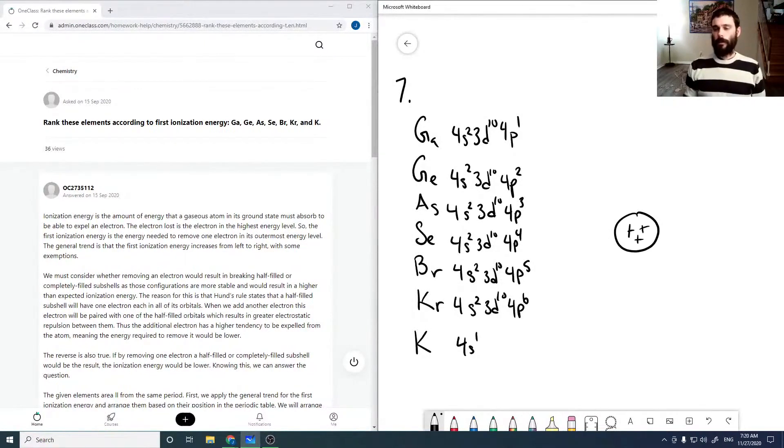Because your nucleus is heavily positively charged, and as you go right across the periodic table, we're increasing this charge, which means that these electrons are actually more and more tightly held.